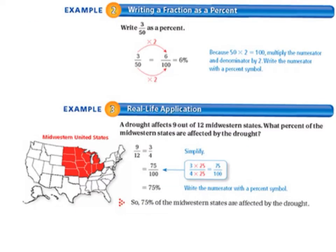Moving on to page 221 and Example 2, we'll be writing a fraction as a percent. If we have 3 fiftieths, we need to think about how we change the denominator into 100. We take 50 and multiply it by 2 to get 100. If we multiply the denominator by 2, we also multiply the numerator by 2. So 3 times 2 equals 6, giving us 6 one-hundredths, which equals 6 percent.